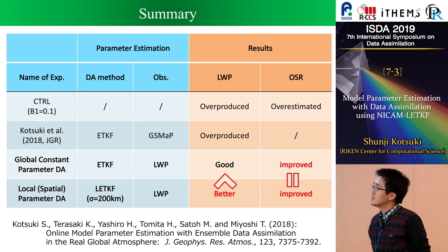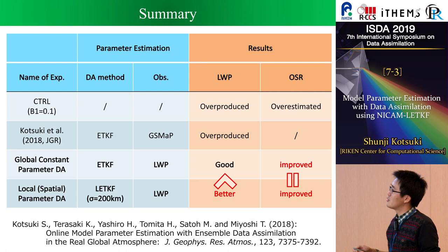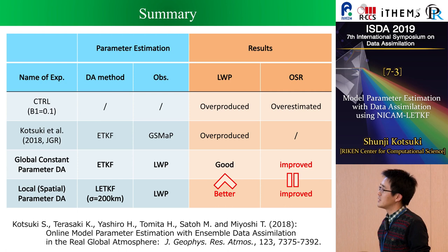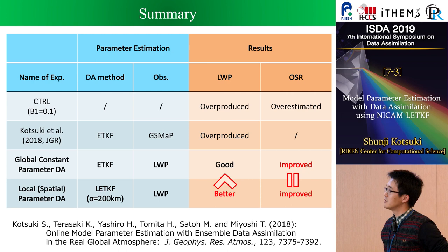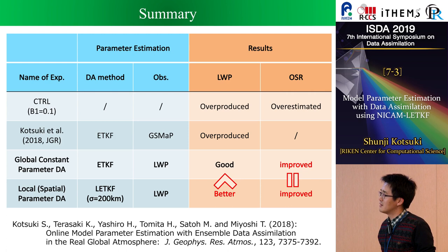Let me summarize my presentation. In this study, I showed three experiments. The first is to estimate the B1 parameter relative to GSMaP precipitation — this estimation can improve the precipitation forecast, but the liquid water path was overestimated and the OSR was degraded. To improve the radiation budget, we conducted two further experiments: one is to estimate the parameter against liquid water path, and the other is to estimate the model parameter locally using LETKF. By changing the observations, the OSR was significantly improved. By using the local ensemble transform Kalman filter, the liquid water path result was better than the globally constant parameter experiment. Thank you very much.